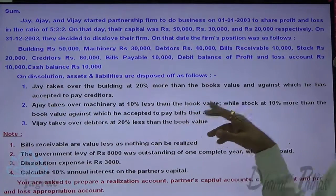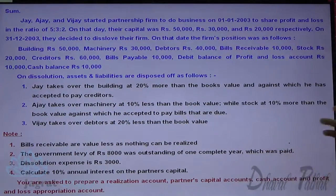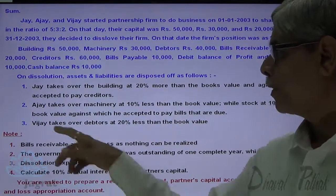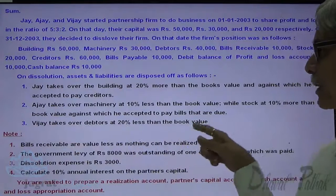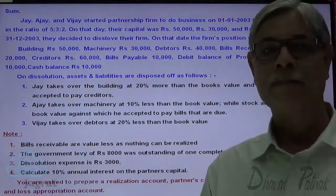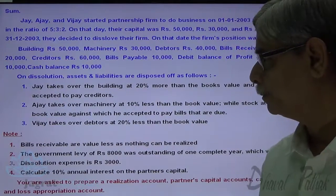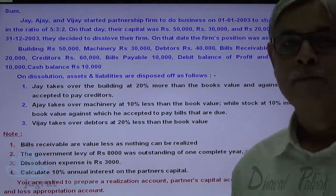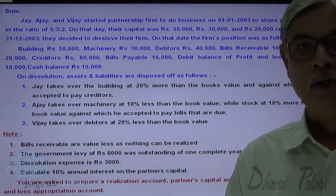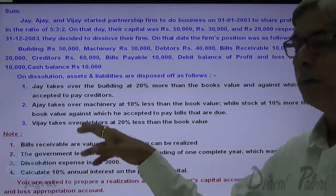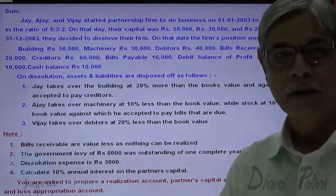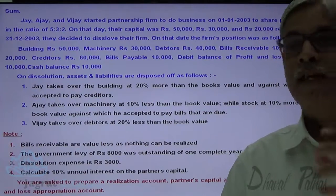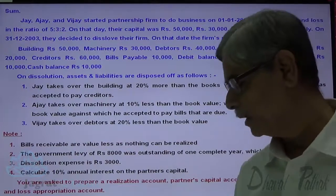Ajay takes over machinery at 10% less than the book value and stock at 10% more than the book value, against which he has accepted to pay the bills payable. Vijay takes over the debtors at 20% less than the book value. Bills receivable are valueless — nothing can be realized, so no entry is passed. The debit to realization account accounts for the loss on bills receivable being unrealized.